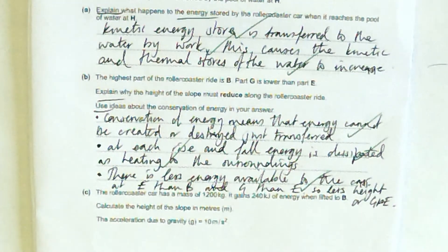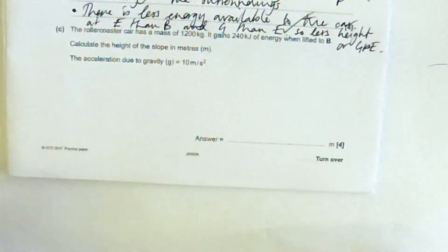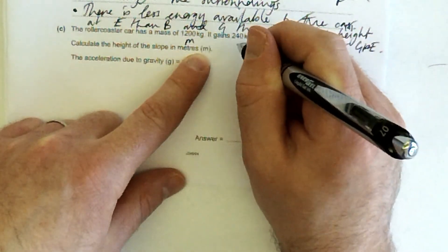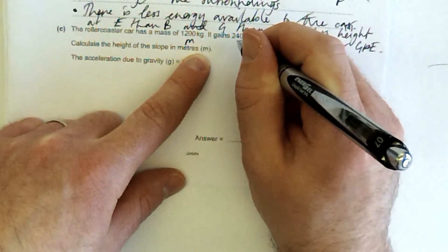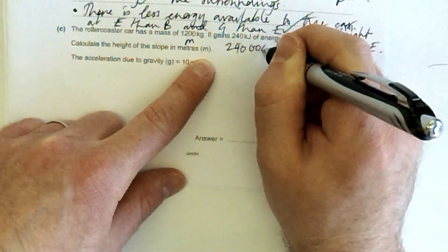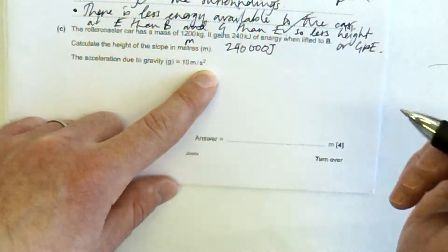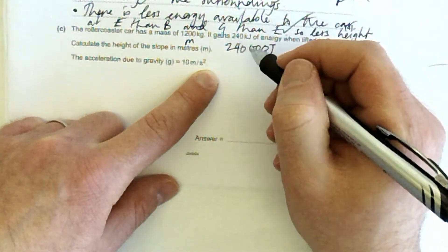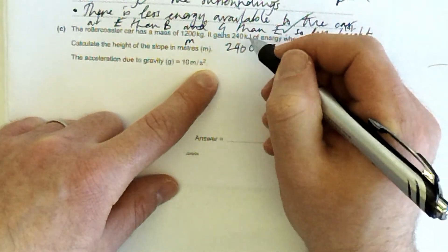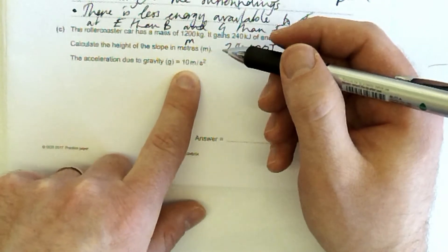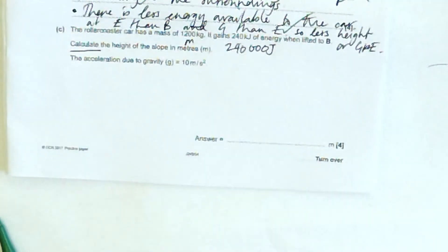So last one then in this question here. A rollercoaster car has a mass of 1,200 kilograms. It gains 240 kilojoules. Now, because I am a whiz, I am going to get rid of the kilo and just replace it with three zeros. Because why wouldn't you? Because we don't want to use non-SI units. So acceleration due to gravity is this. We're asked to calculate the height.